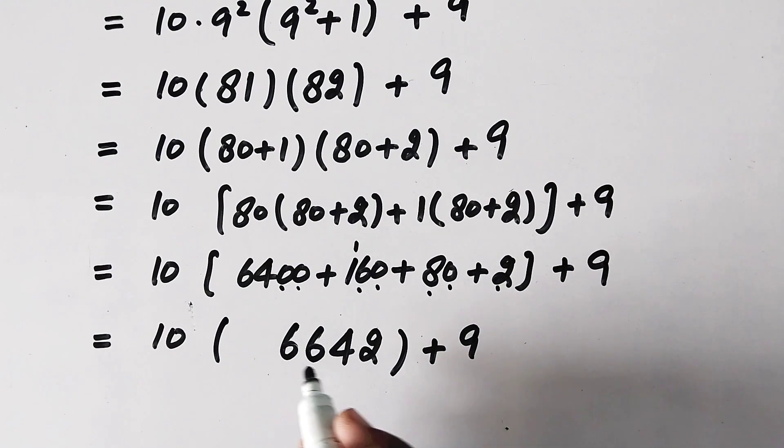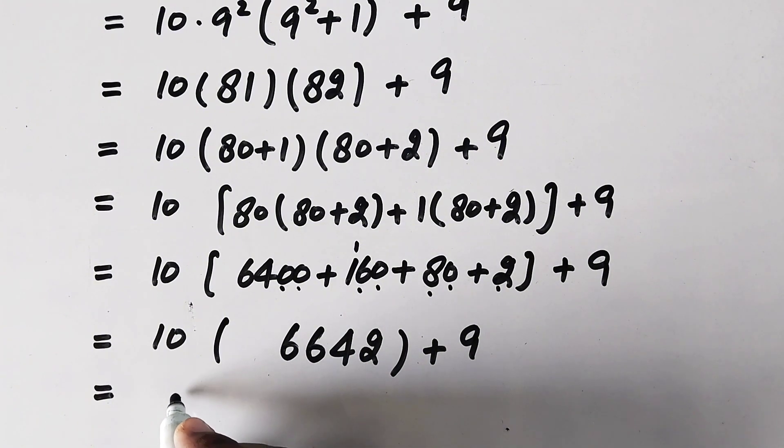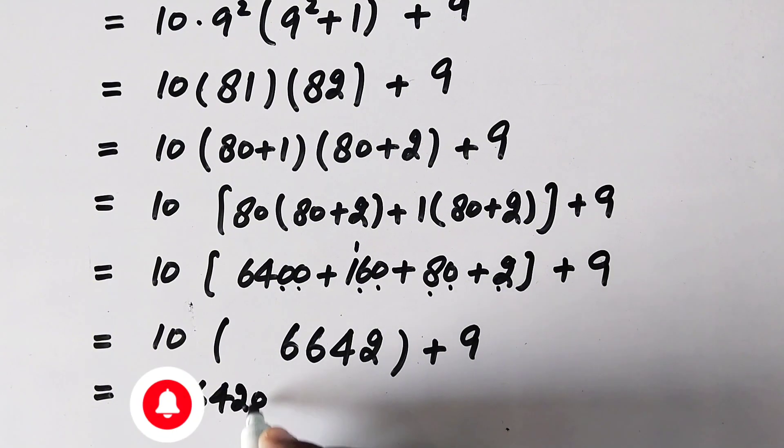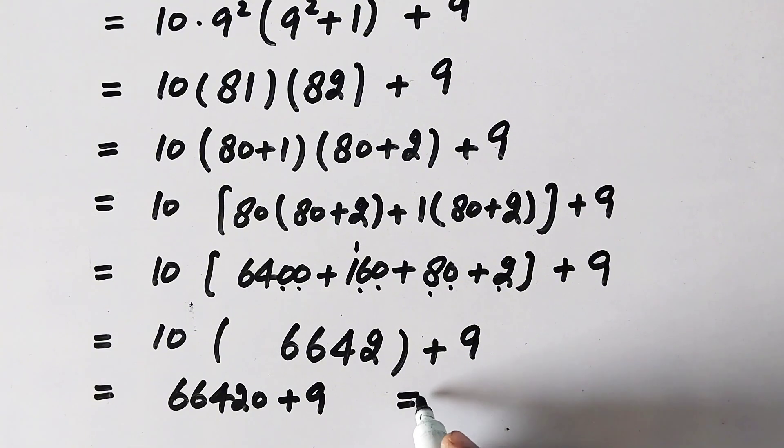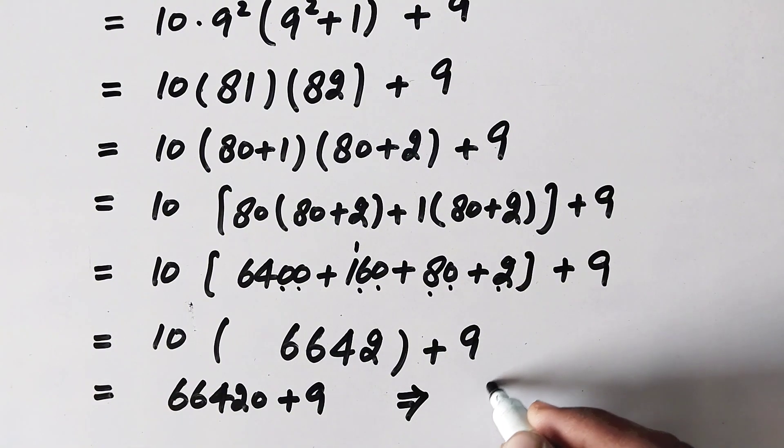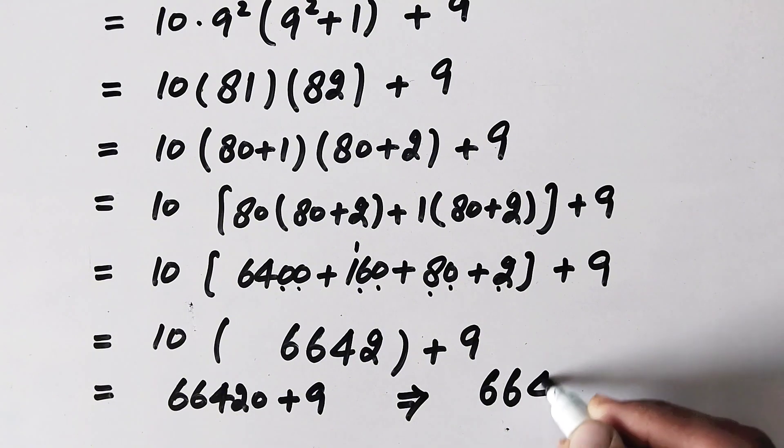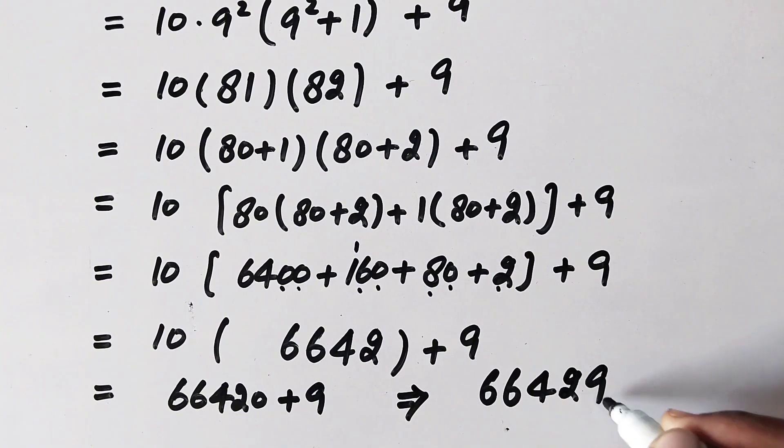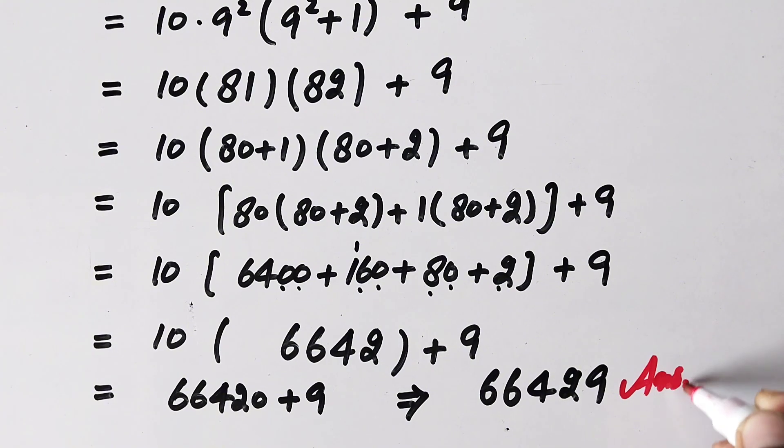So now by multiplying 10 with this value that is 6642, it will become 66420, plus 9. That will be equal to 66429. That is our final answer.